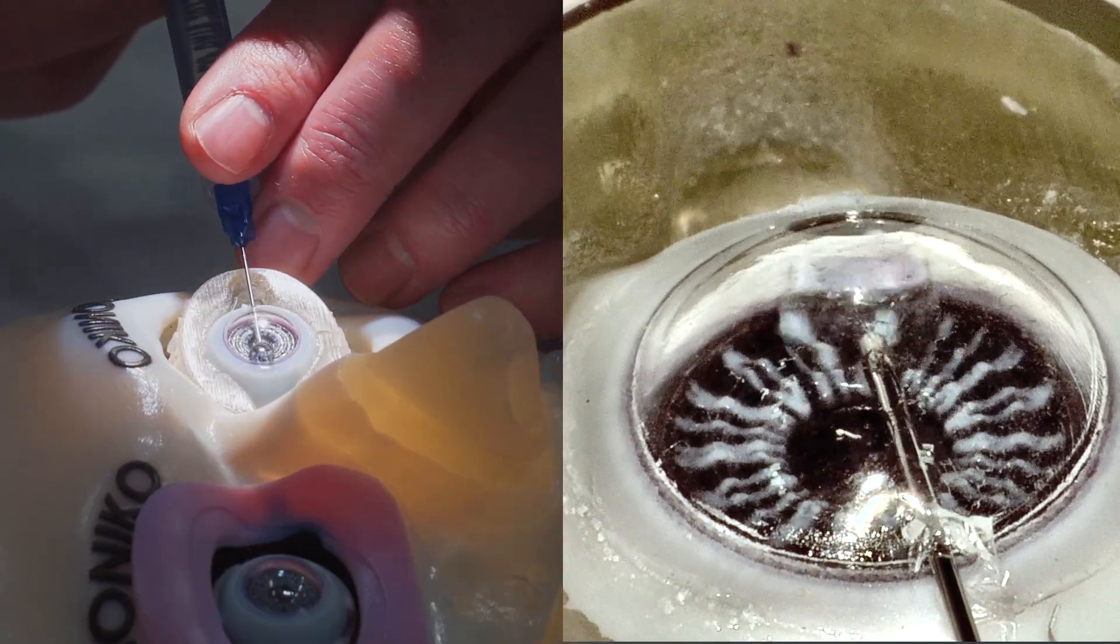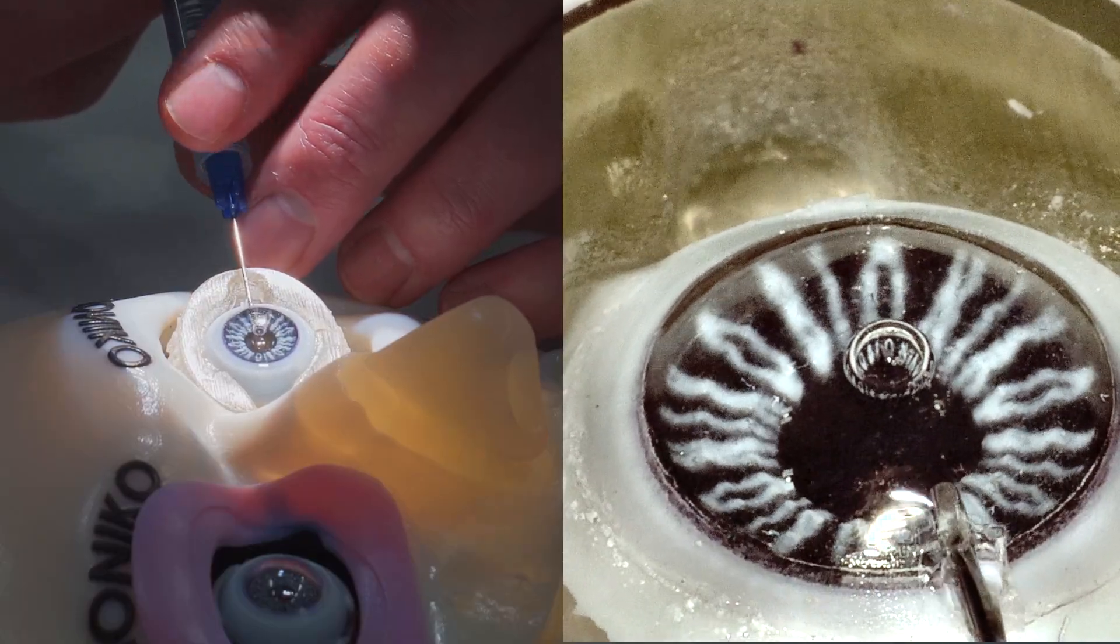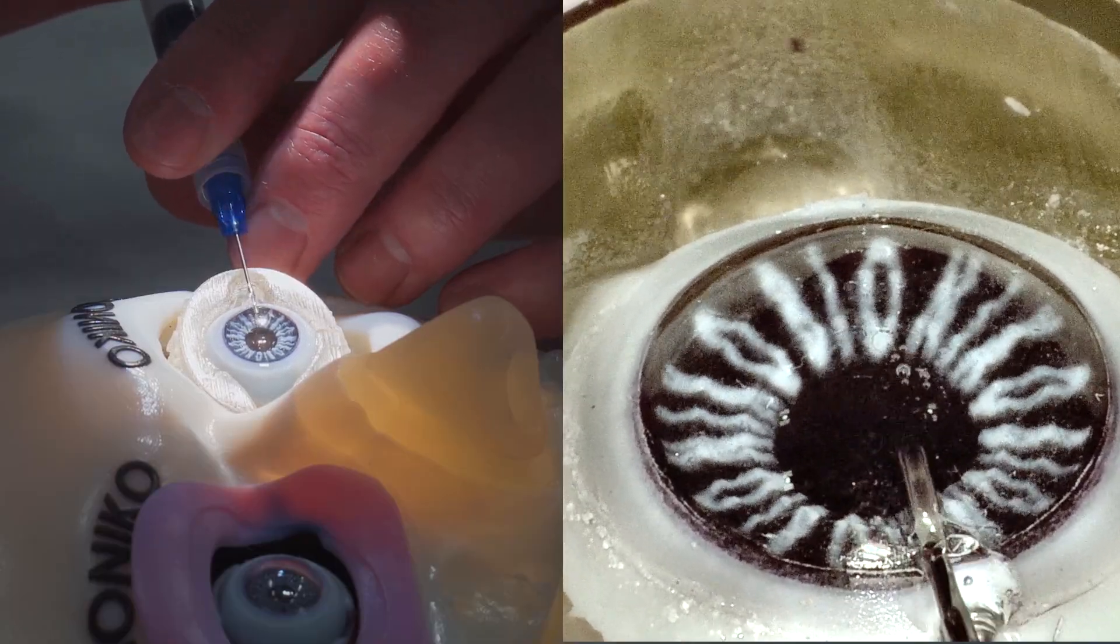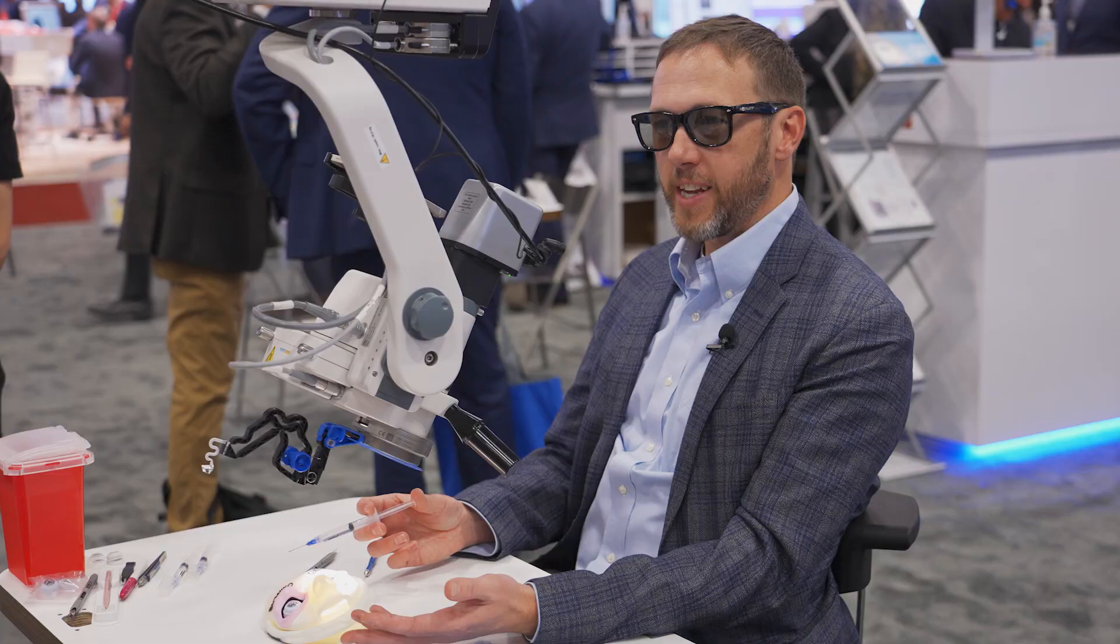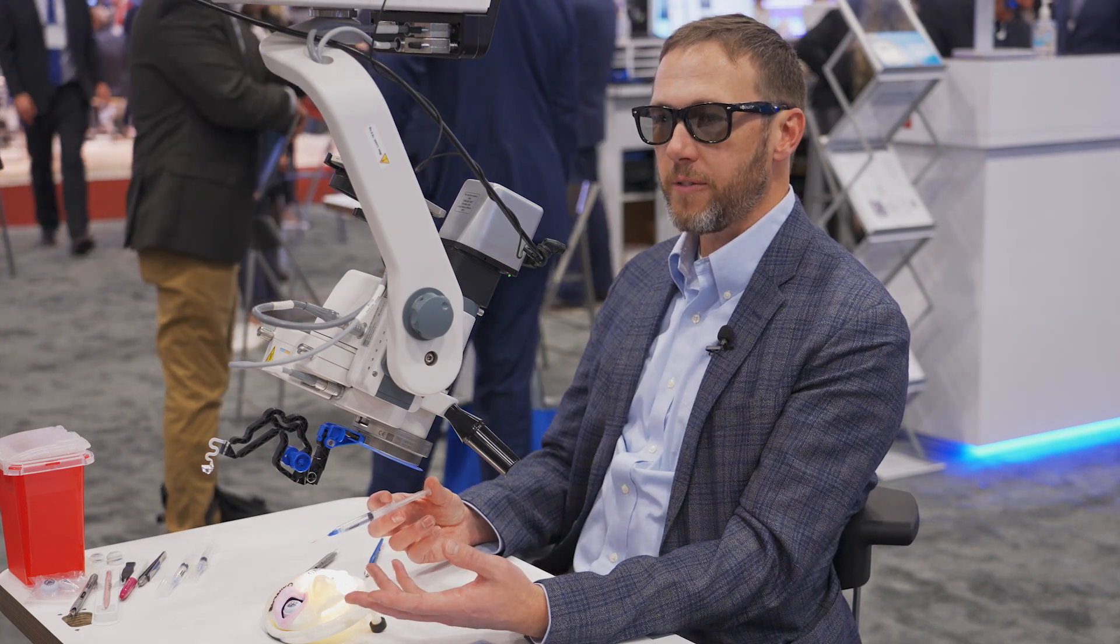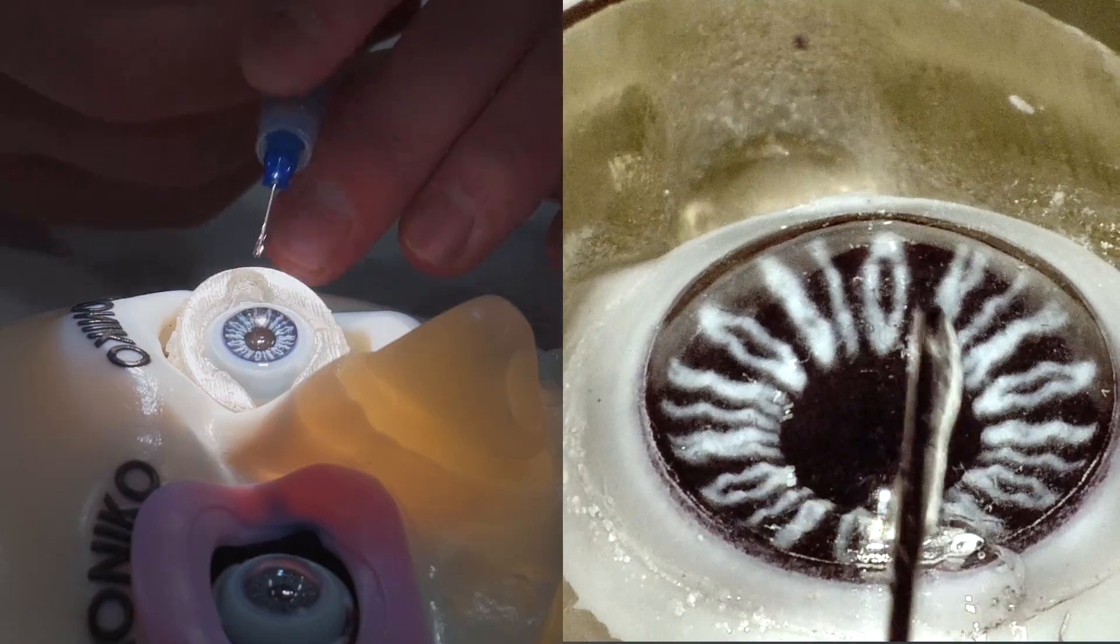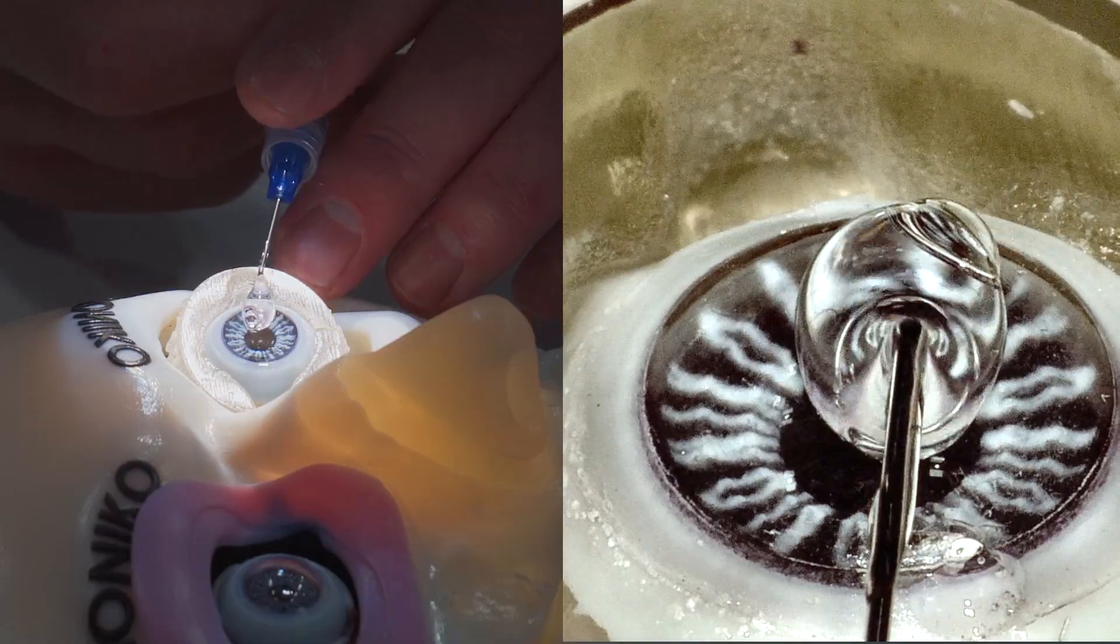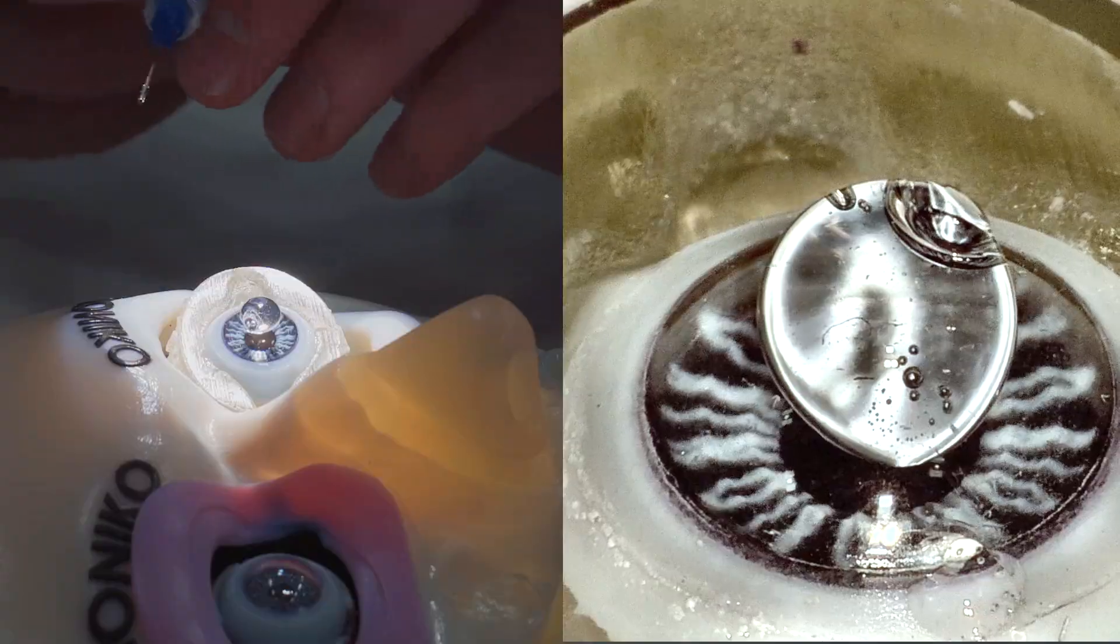For any angle procedure, you want to make sure you have a nice fill in the anterior chamber. If you underfill, you're going to see a lot of striae; it's going to make visualization more difficult. If you leave a bubble behind like I just did, that's going to make it more difficult, so we're going to get that out of the way. At this point, you're going to rotate the patient's head. Once you get the AC filled, you're going to rotate the patient's head about 30 to 45 degrees away from you, and then rotate the scope about 30 to 45 degrees towards you. Then we're going to put a nice dollop of viscoelastic on the cornea, and that's just going to be our coupling agent.